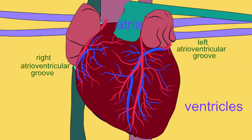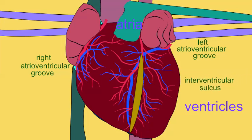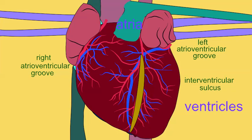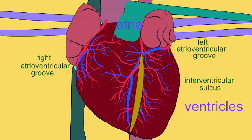Between the two ventricles lies the interventricular sulcus. This is the anterior interventricular sulcus depicted here.